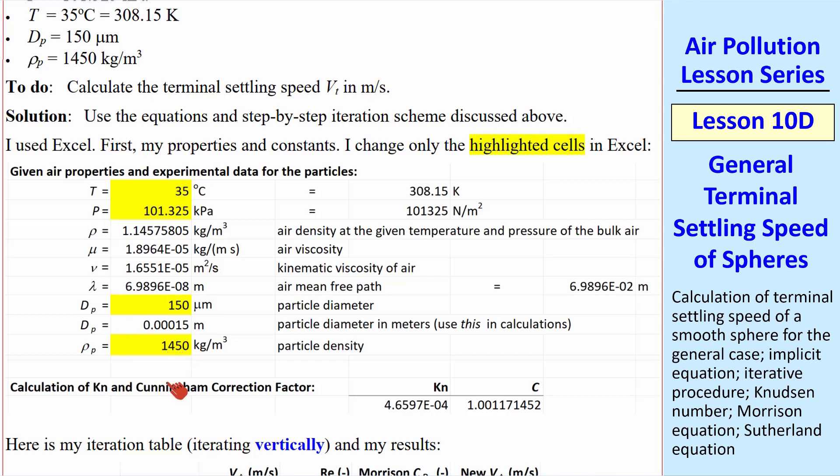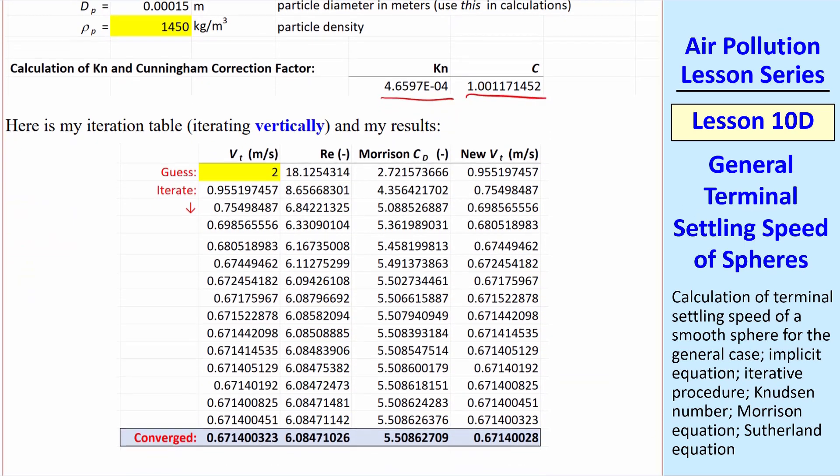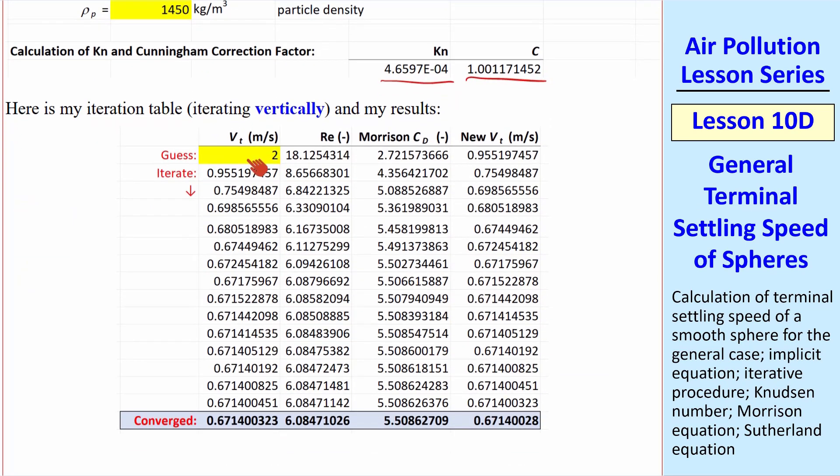diameter, and density of the particle. Everything else is calculated. I calculate my Knudsen number and my Cunningham correction factor. And then here's my iteration as I described above. My initial guess was 2 meters per second. I got a Reynolds number, a drag coefficient from the Morrison equation, and a revised vt.